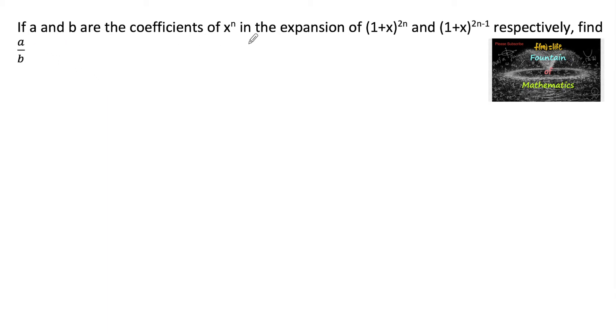If a and b are the coefficients of x power n in the expansion of 1 plus x whole power 2n and 1 plus x whole power 2n minus 1 respectively, then find the ratio a upon b.